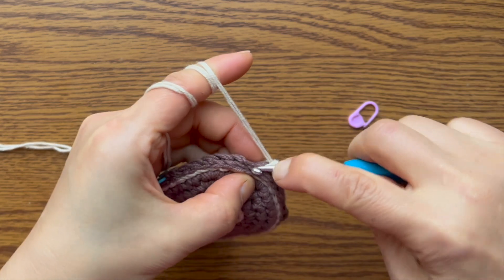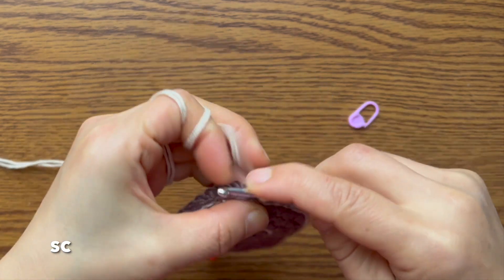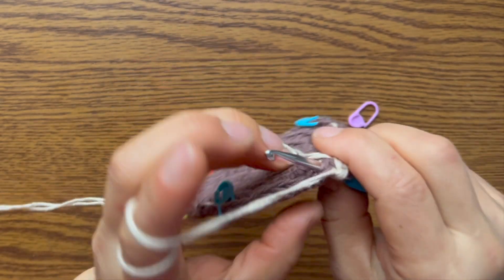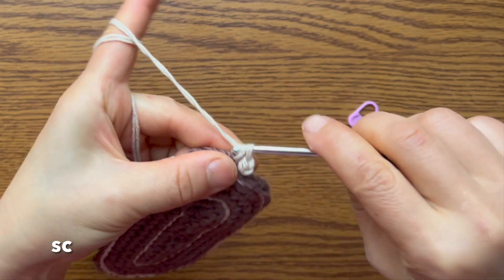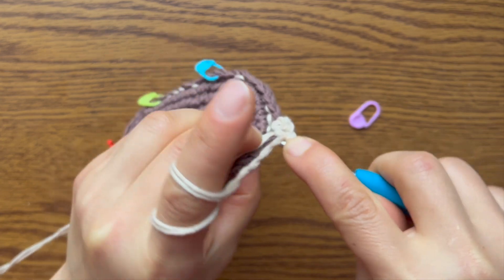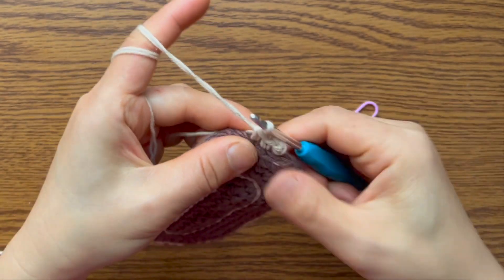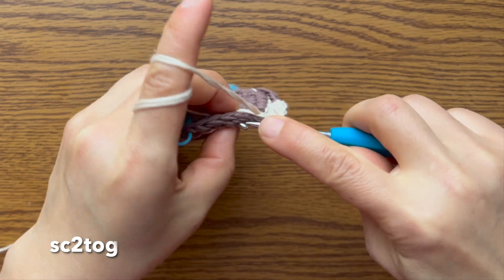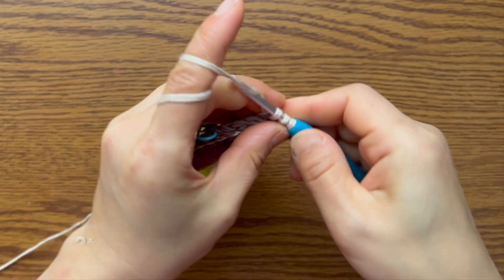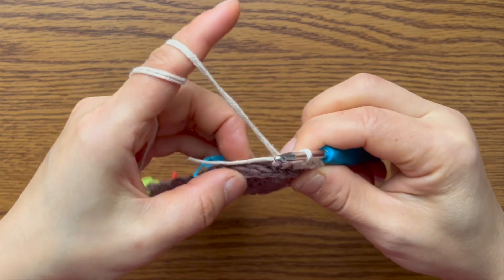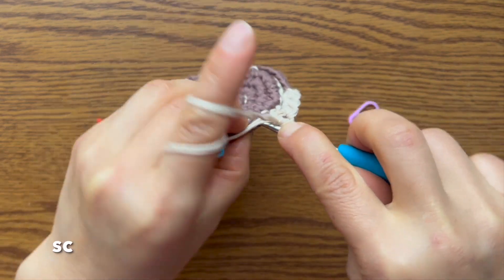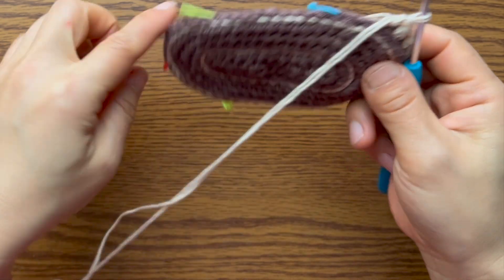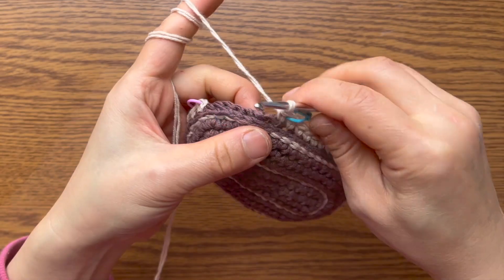Chain one and single crochet in the same space. One single crochet each for next two stitches. Decrease one stitch here. One single crochet each to the blue marker on the other side. Now we reach the other side.